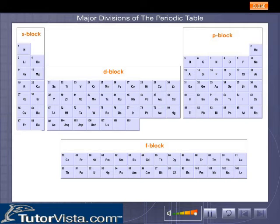The entire periodic table is divided into four blocks: S, P, D and F. Click on each block for more details.